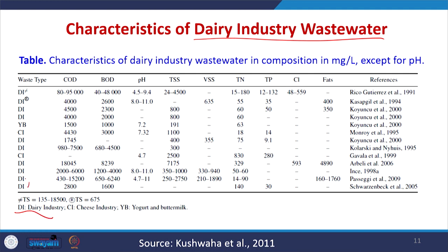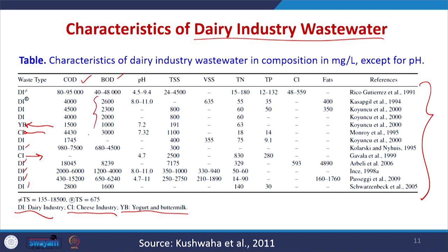Dairy industry wastewater characteristics differ by product type: DI stands for dairy industry in general, CI for cheese processing industry, and YB for yogurt and buttermilk. These characteristics from the literature show that the BOD range is very high, varying from 40 to 48,000. Representative values include 2600, 2300, 2000, and 1000, with BOD beyond 1000 in virtually all cases. pH, TSS, VSS, total nitrogen, and total phosphorus are all important parameters, with nitrogen content and fats also present.